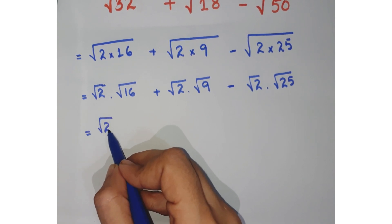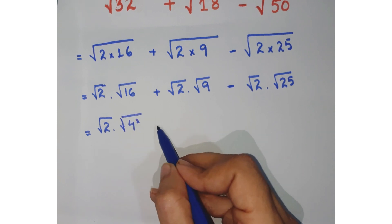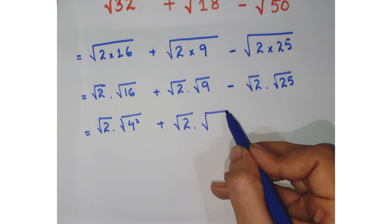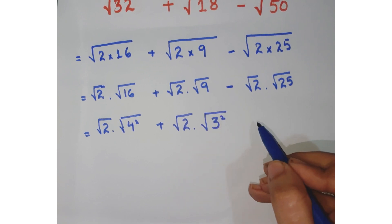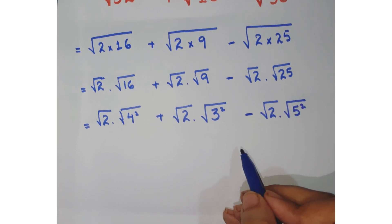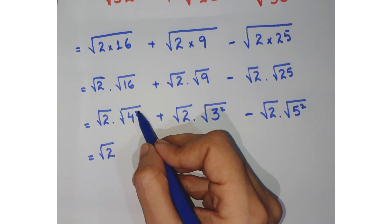Now as you know that √16, this 16 is a perfect square of 4, so you can write it as √2 × √(4²) + √2 × √(3²) - √2 × √(5²).